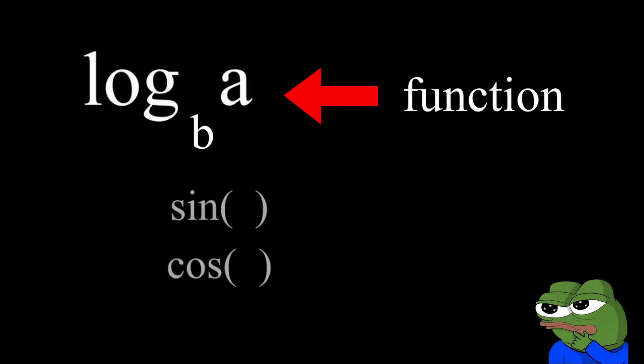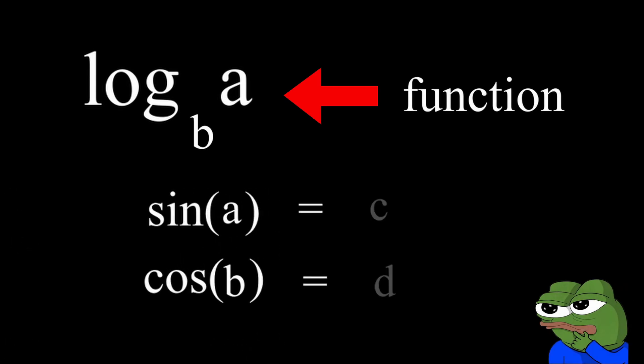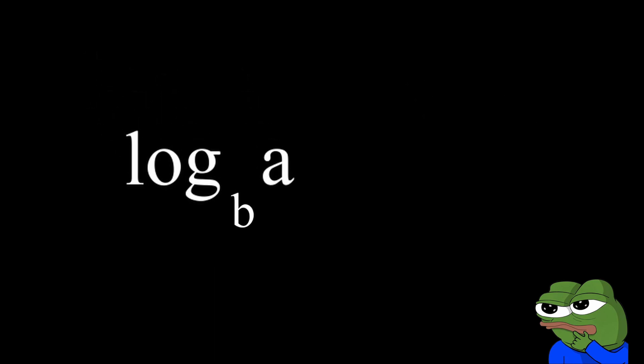The logarithm is a function. It's like sine or cosine. You input a number and it outputs another number. Let's take a closer look. We have three parts: the base, argument, and exponent.